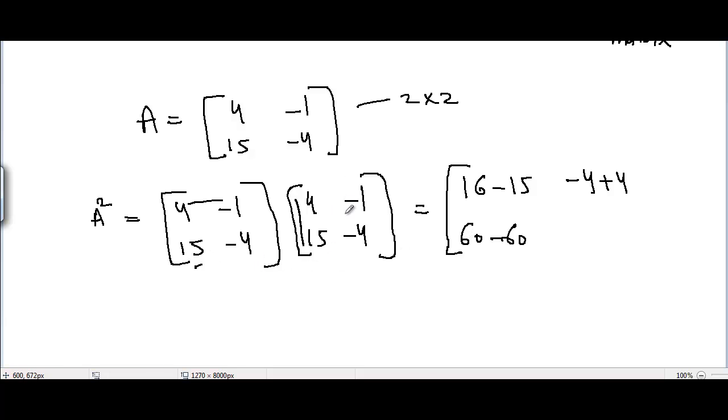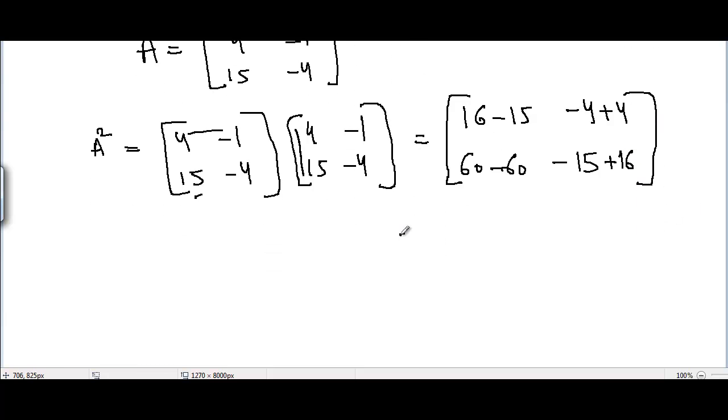Now second row, second column: 15 times -1 is -15. So we get 16 minus 15 equals 1, -4 plus 4 is 0, 60 minus 60 is 0, and -15 plus 16 is 1. So this is an identity matrix of order 2 by 2.